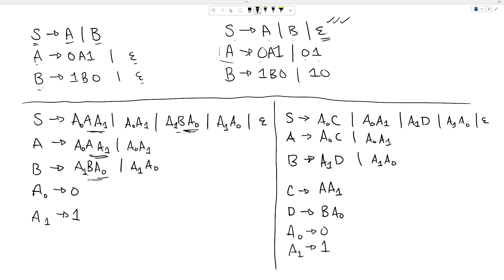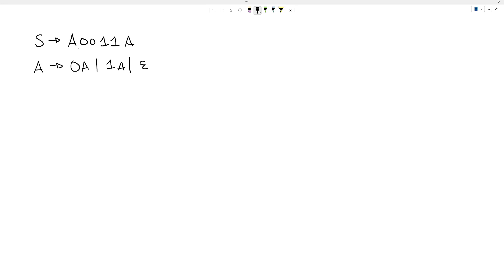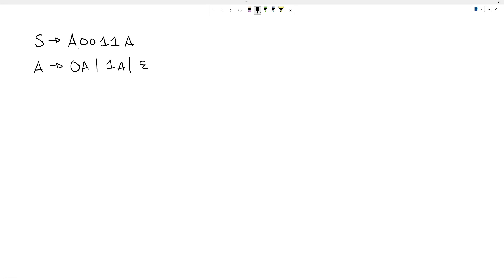Let's look at another example. This grammar is for the language that contains the substring 0011. On the left-hand side, the rule A can make any string of zeros and ones, so this language is simply 'contains the substring 0011.' Let's follow the same process. We begin by checking if a new start rule is needed — the start rule doesn't appear on the right-hand side, so we skip that step again.